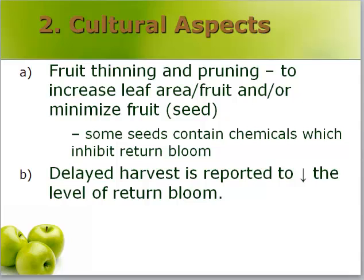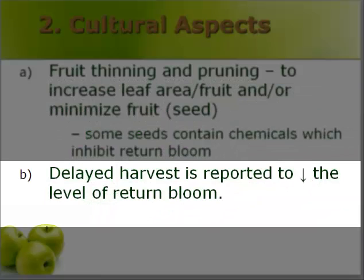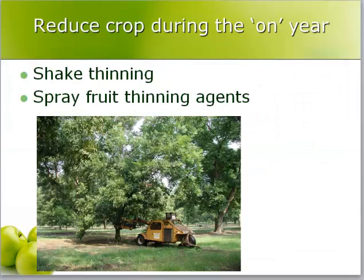I'd like to talk about some cultural aspects of alternate bearing. First, fruit thinning and pruning: these practices tend to increase the leaf-area-to-fruit ratio and minimize seeds, which decreases alternate bearing. Some seeds contain plant growth regulators such as auxins and gibberellins which can inhibit return bloom. Early harvest will also decrease alternate bearing, as delayed harvest is reported to decrease return bloom the next year. To decrease the peaks and valleys of yields, you can thin the crop during the heavily cropping year by shake thinning or spray thinning using fruit thinning agents.